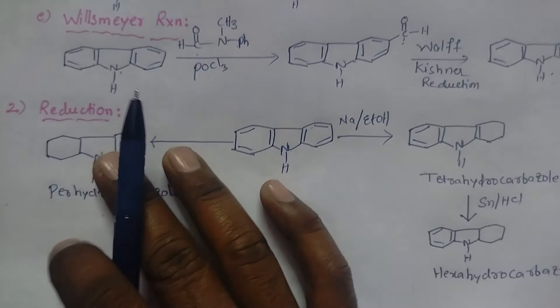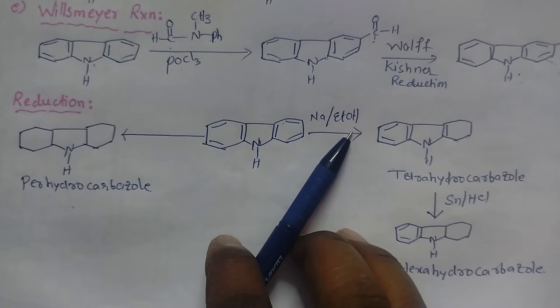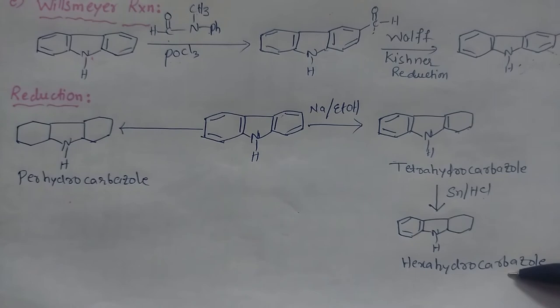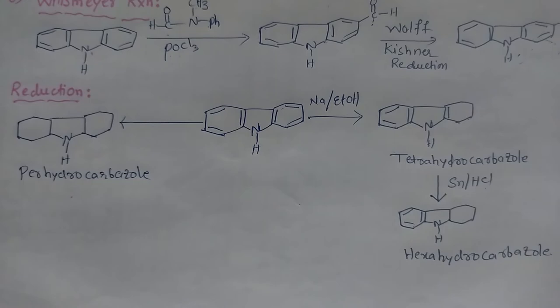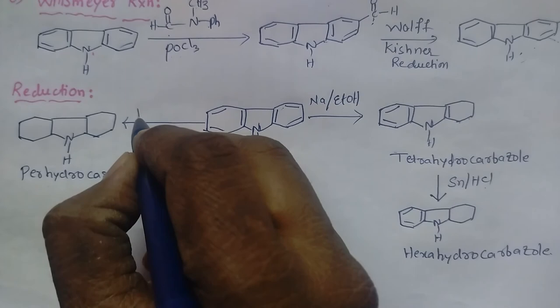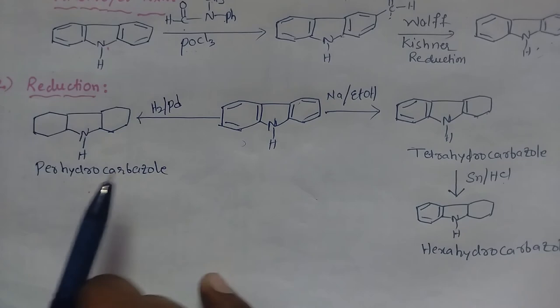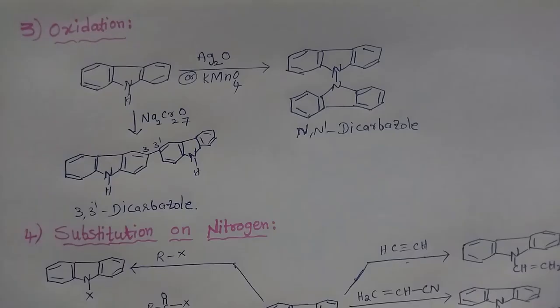For reduction reactions, when carbazole is treated with sodium and ethyl alcohol, we get tetrahydrocarbazole. When this is further treated with HCl, we get hexahydrocarbazole. When carbazole is treated with hydrogen gas in the presence of a catalyst, all double bonds are reduced to single bonds and we get perhydrocarbazole.